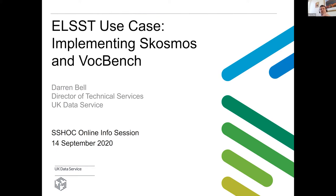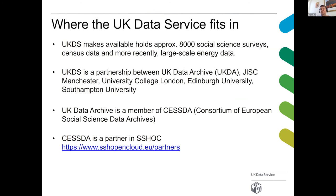Where the UK Data Service fits into all of this: we're a social sciences repository or archive and we hold around 8,000 surveys, census data and, more recently, we've been branching out into different data sources like energy data. The UK Data Service is a consortium — a particular partnership between the Data Archive, who I work for, JISC up at Manchester, University College London, Edinburgh and Southampton.